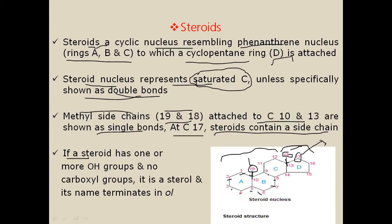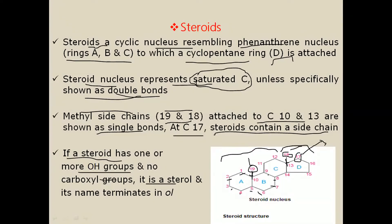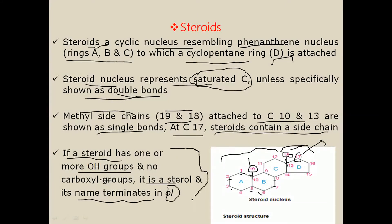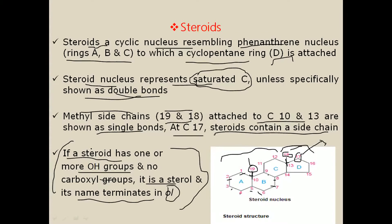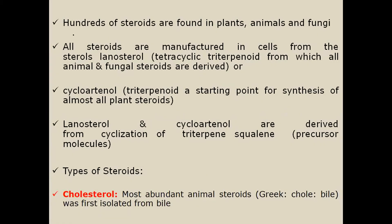If a steroid has one or more OH groups and no carboxyl group, it is called a sterol, and its name will end in '-ol'. For example, stigmasterol. This is a subgroup of steroids which contains one or more OH groups.